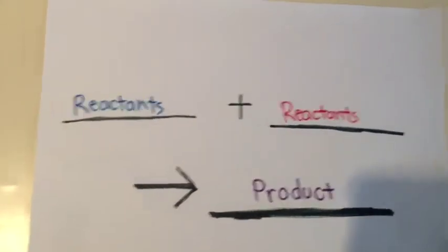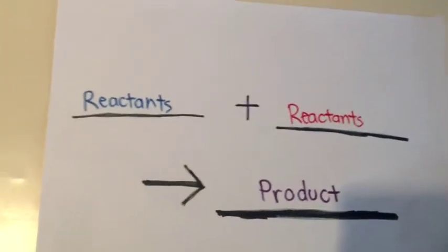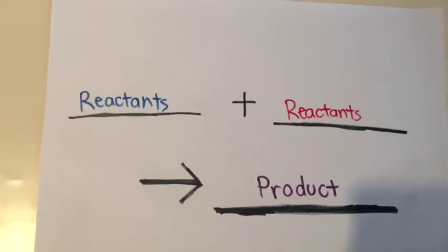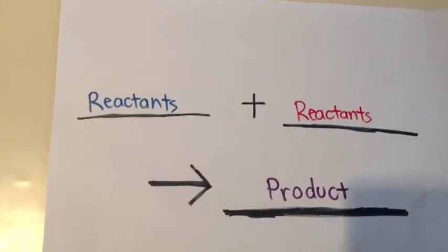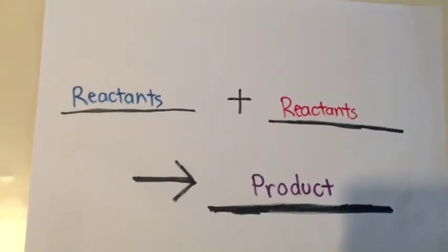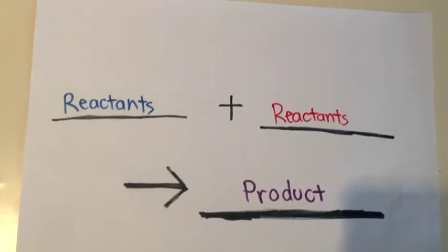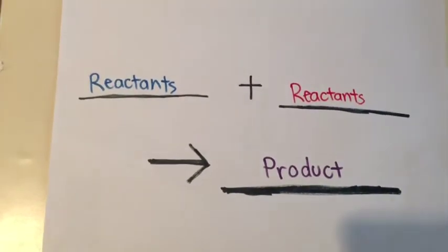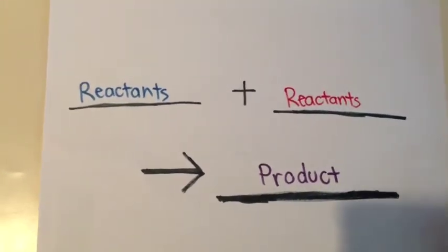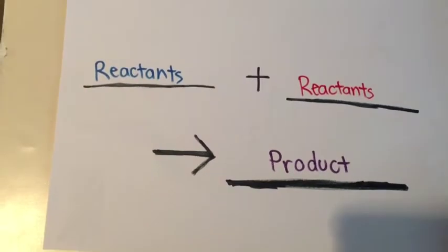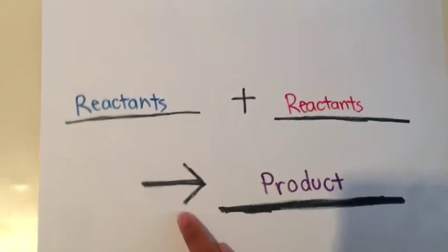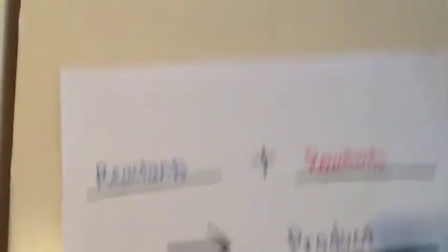The law of conservation says that you have to have exactly the same amount of matter still existing in your product. In other words, no reactants will magically disappear in your product. The way you read a chemical formula is by saying reactants plus reactants yields product.